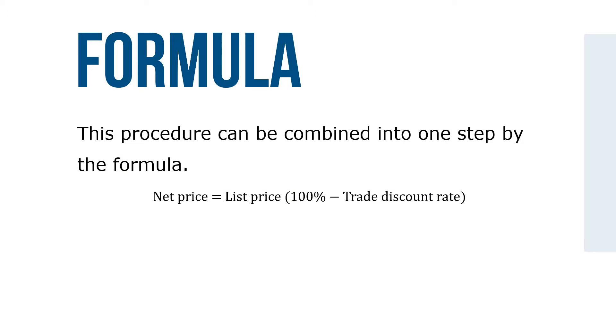This procedure can be combined into one step by a formula: net price equals list price times (100% minus trade discount rate).